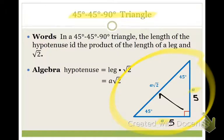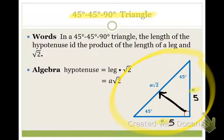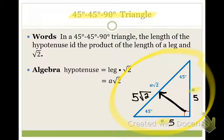Here's what we know about the hypotenuse. Which side is the hypotenuse? It's opposite the right angle. The hypotenuse of a 45-45-90 is going to be the leg length times the square root of 2. So if my leg length is 5, my hypotenuse would be 5 times the square root of 2. Whatever the leg length is, times the square root of 2.